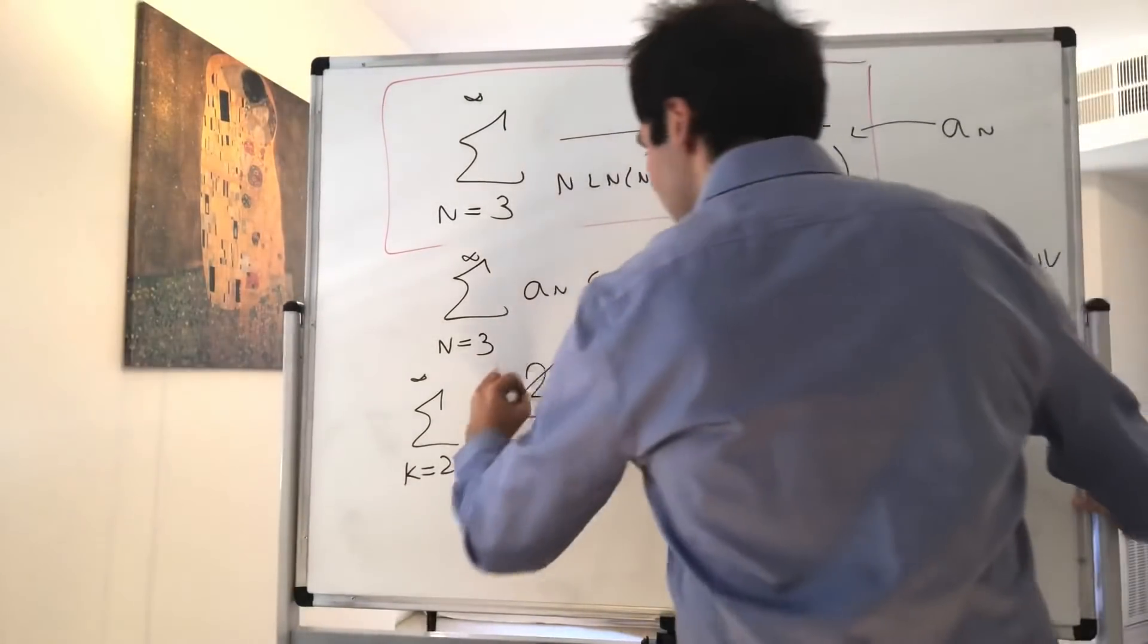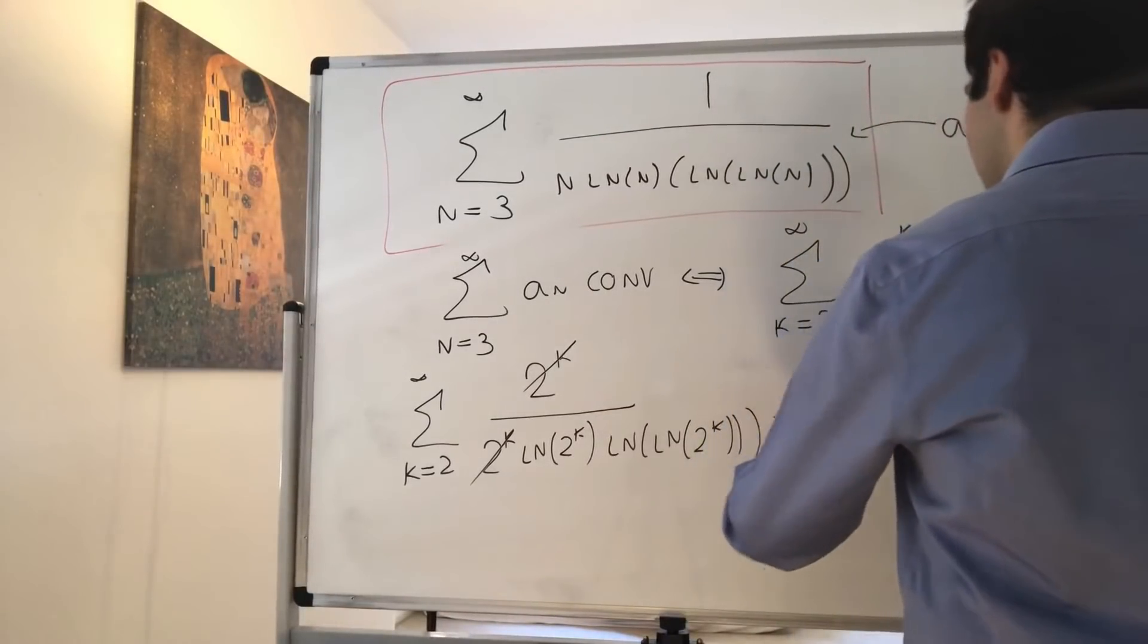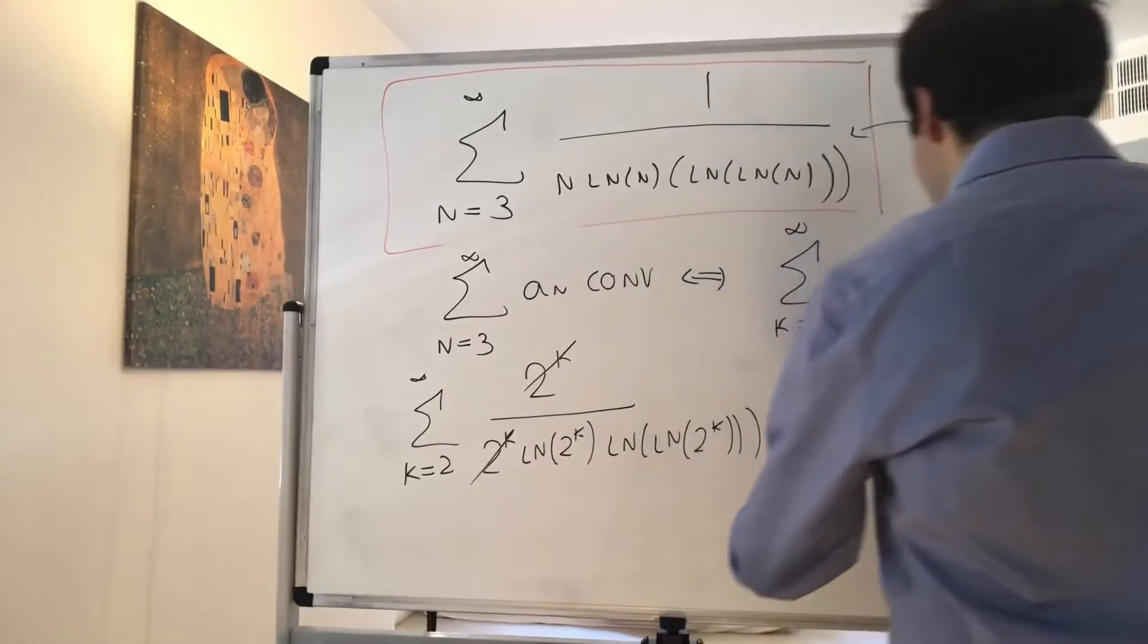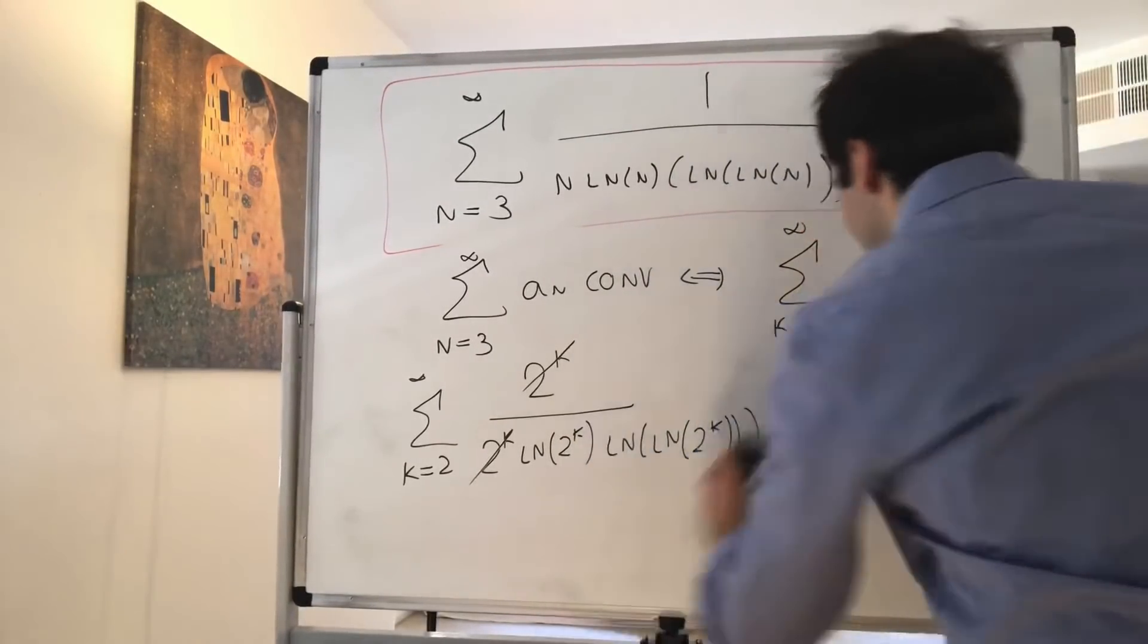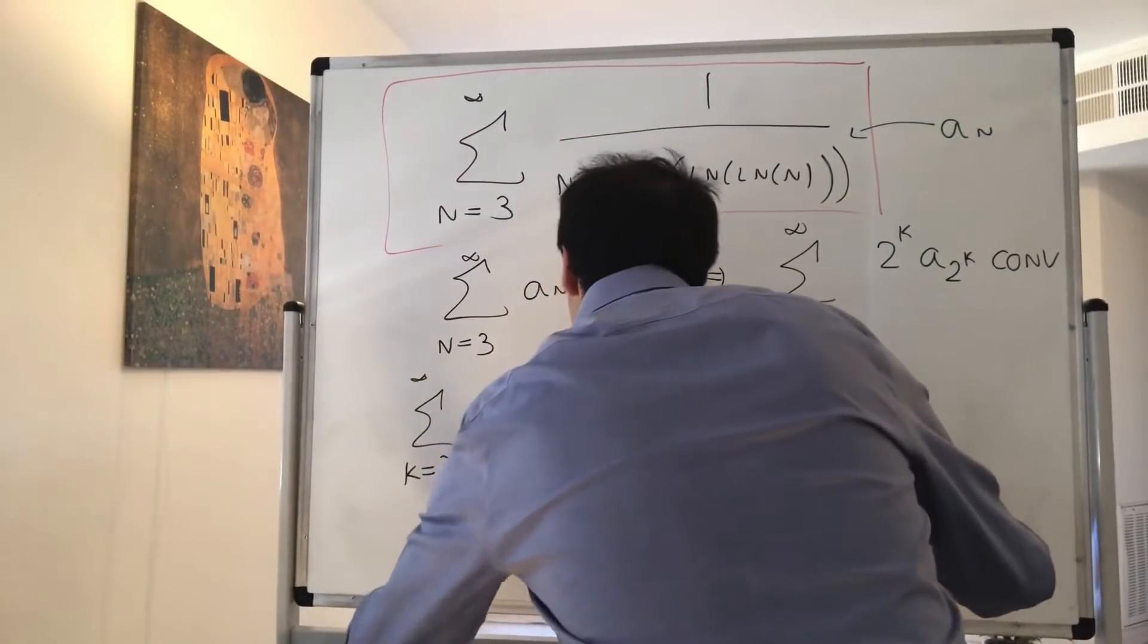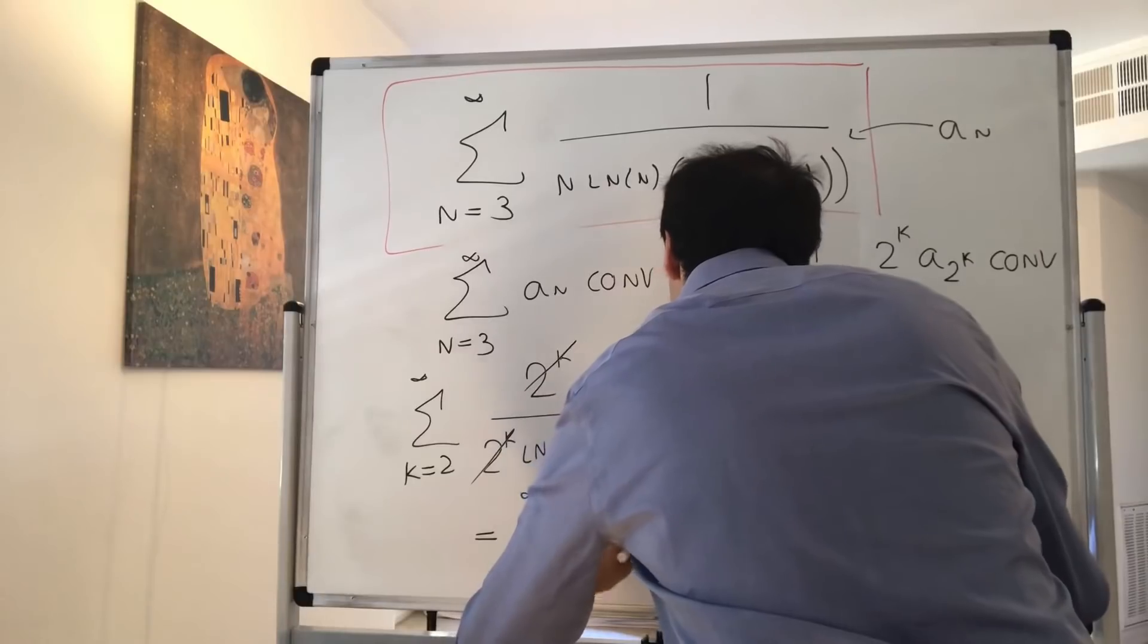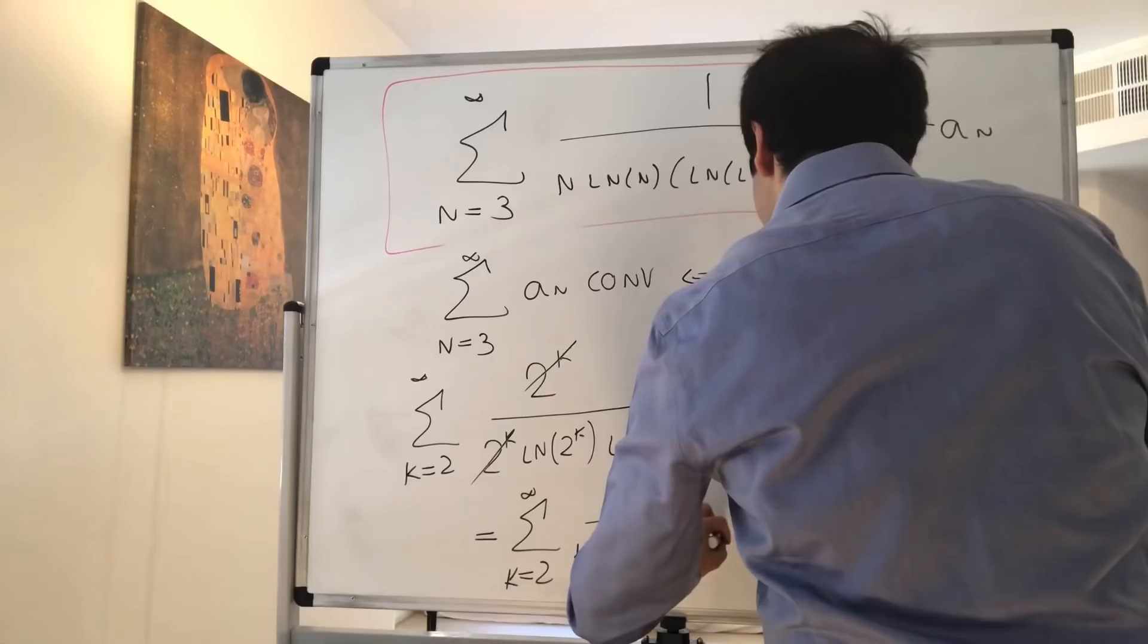And then the nice thing is this simplifies. So we get 2^k over 2^k, which becomes a sum from k from 2 to infinity of 1 over k ln of 2. And then, let me draw it here. So this becomes a sum from k from 2 to infinity of 1 over k ln of 2, and then ln of k ln of 2.